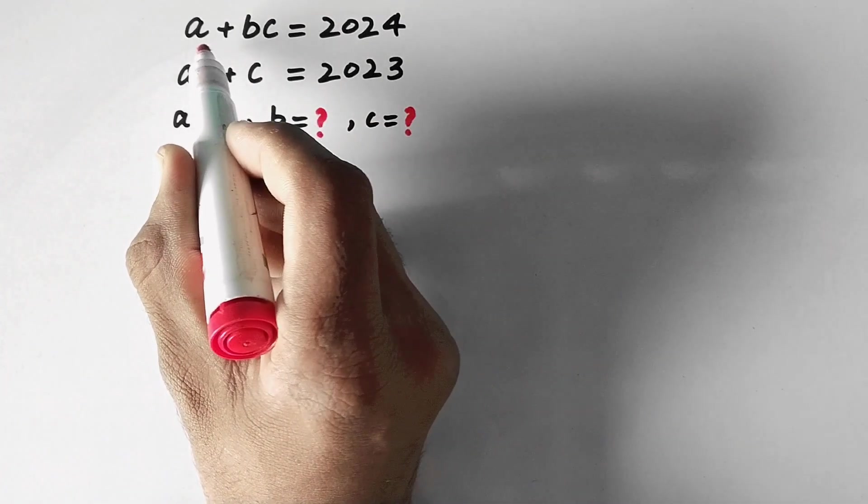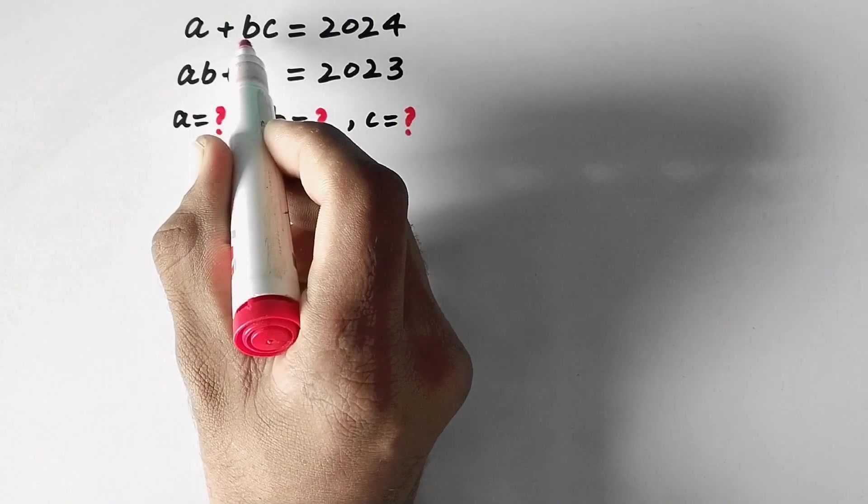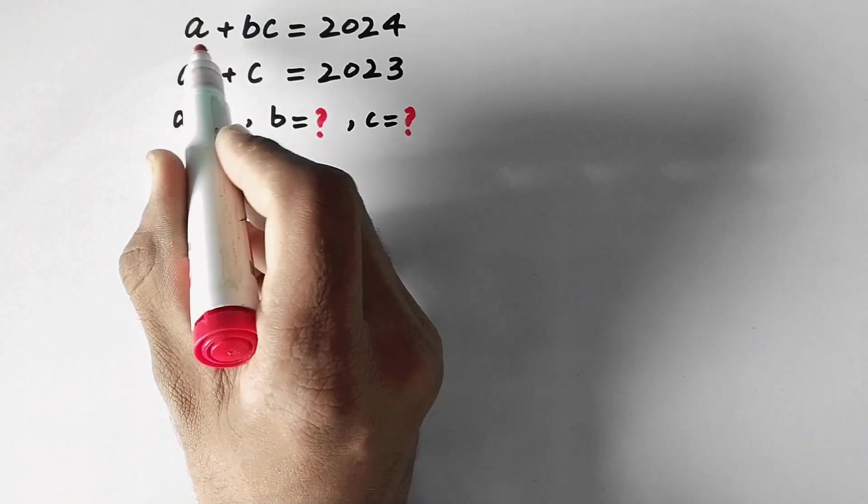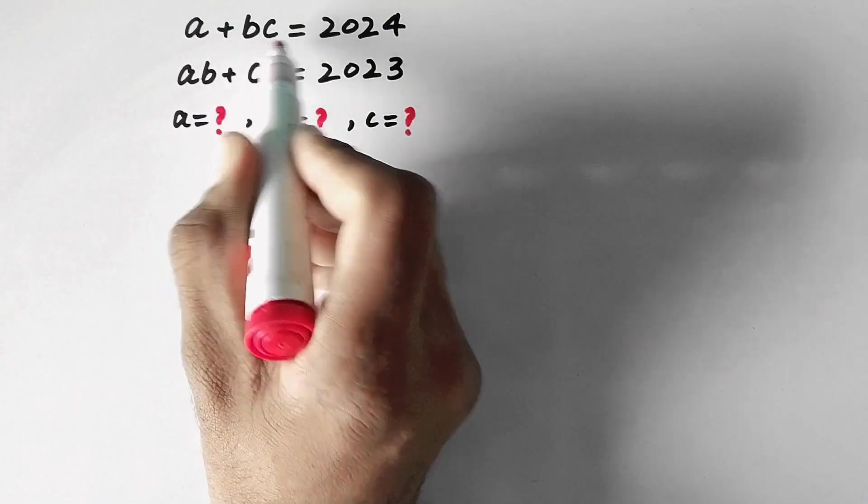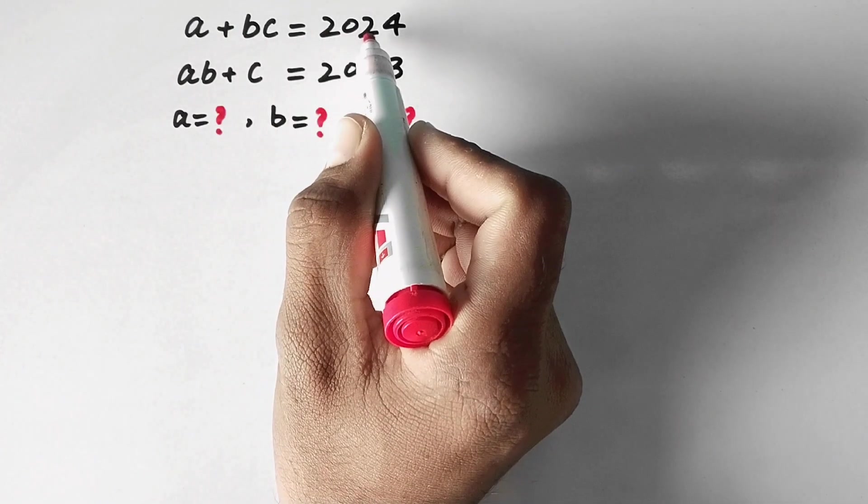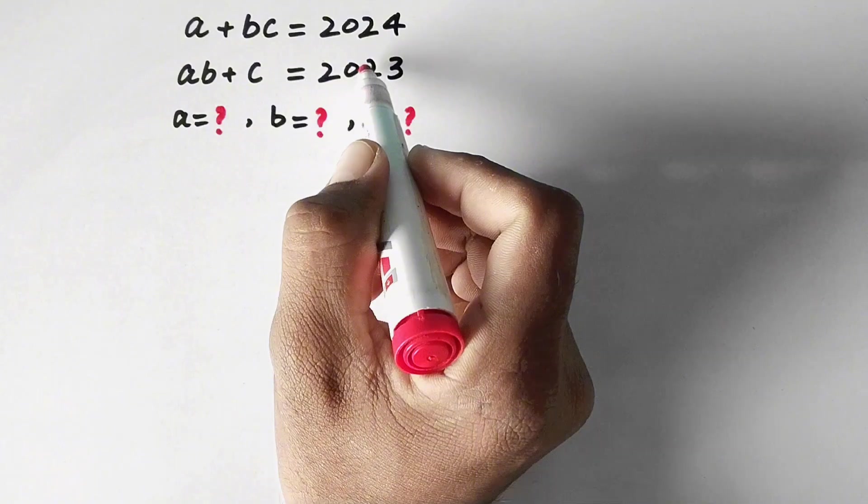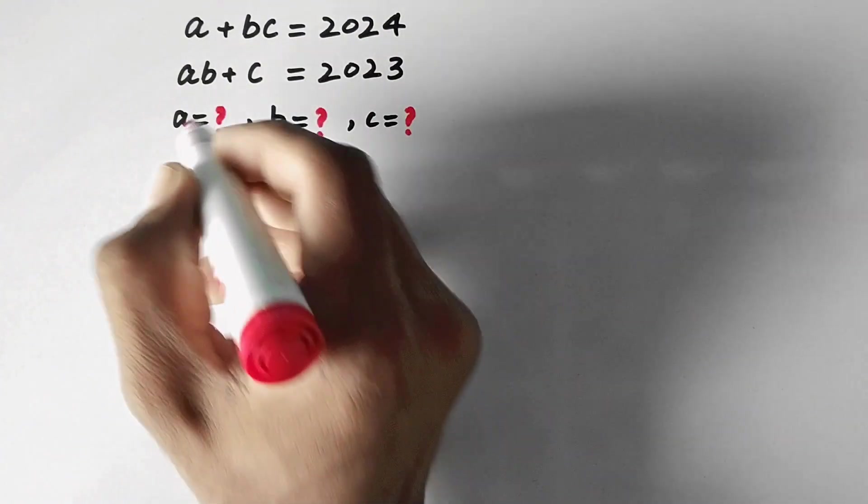Alright, we have been solving equations with two variables. Today there are three variables in the equation, and the difference between these values is 1. So let us see the solution.